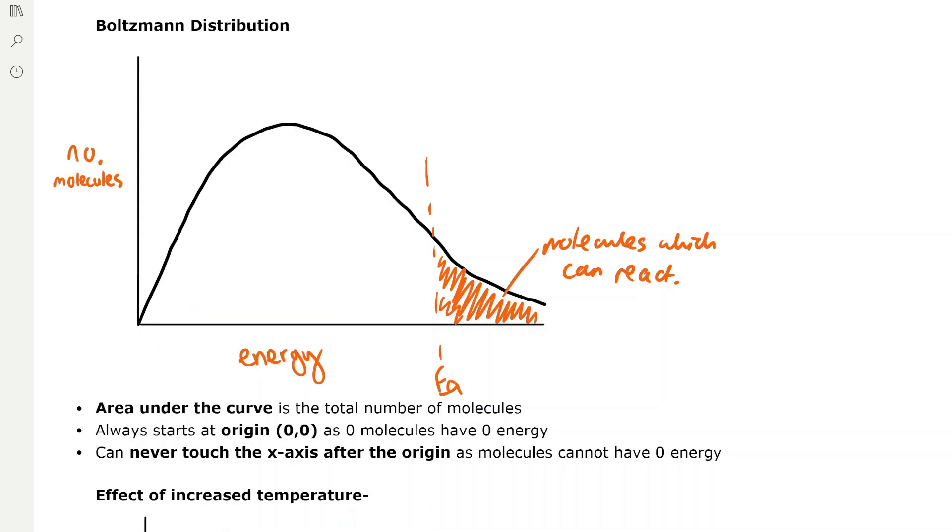The Boltzmann distribution is a concept that we use to represent the energy of molecules in a reaction system. On the y-axis we have the number of molecules in the system, and on the x-axis we have the energy of the molecules. The area under the curve is the total number of molecules, and the area to the right of the line, which is represented as the activation energy or Ea, is the molecules which can react if they collide in the correct orientation.